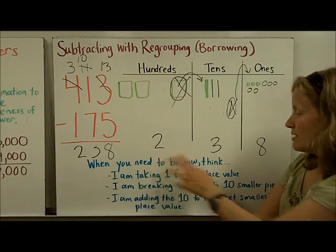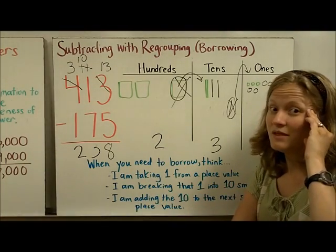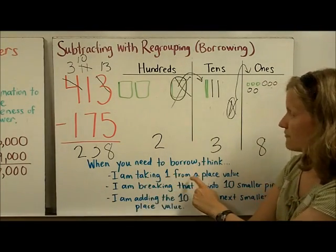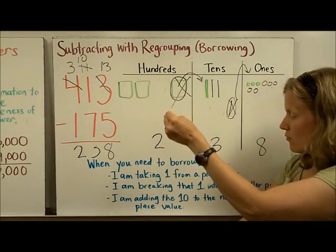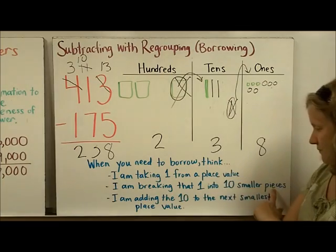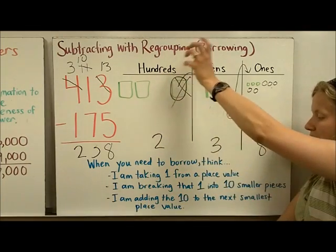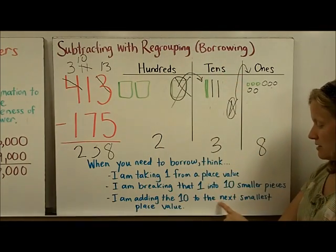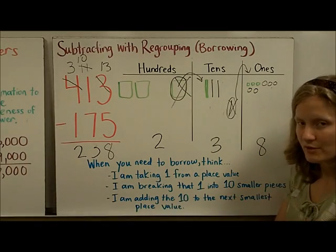So when you need to borrow, this is what I'm thinking in my brain when I'm borrowing. I'm taking one from a place value. So I'm taking out one. I'm breaking that into ten smaller pieces. And then I'm adding that, those ten smaller pieces, to the next smallest place value.